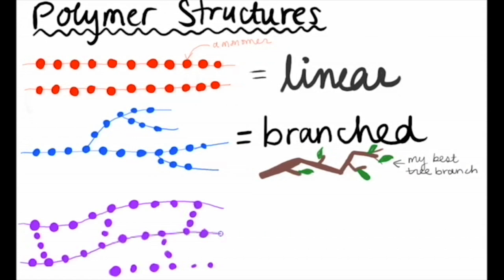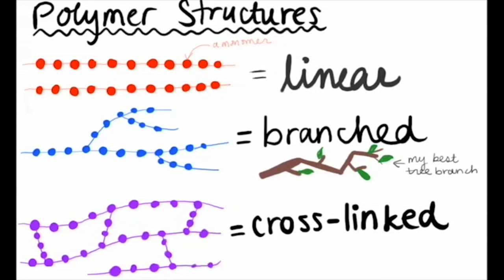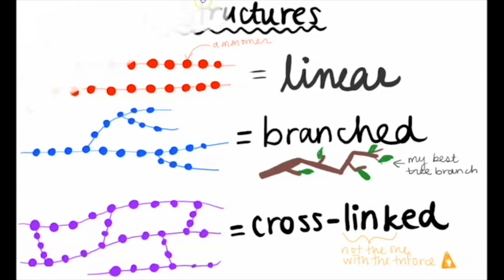Polymers can also be cross-linked. In this case, chains are connected, or linked, to each other. These are just some of the many structures and forms polymers can take.